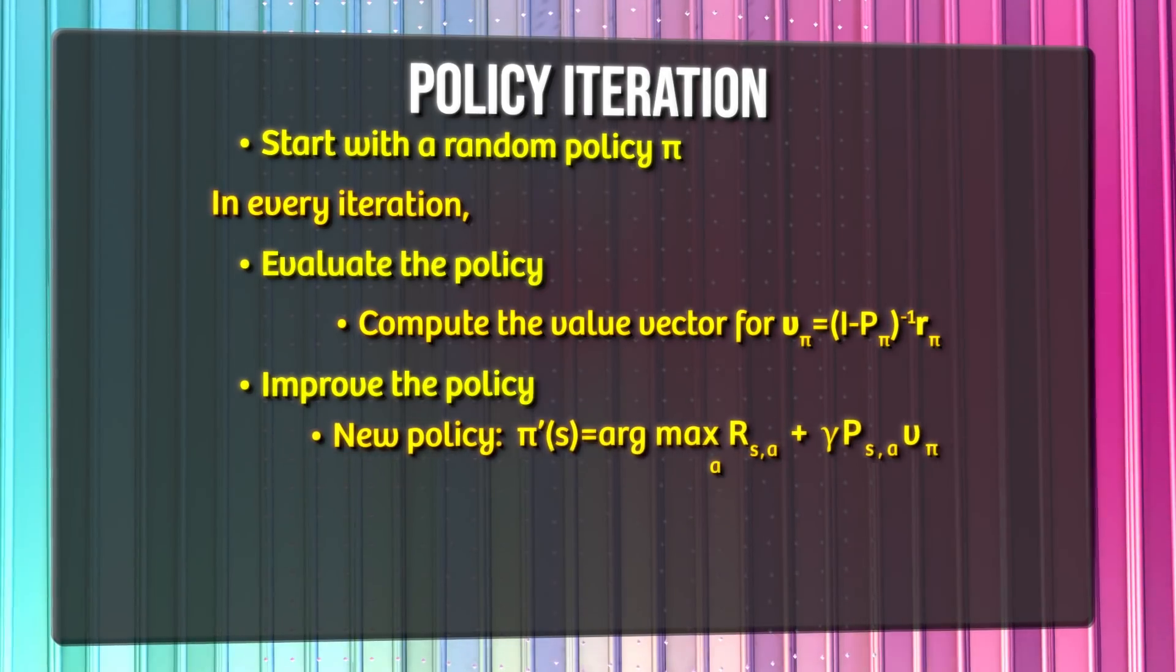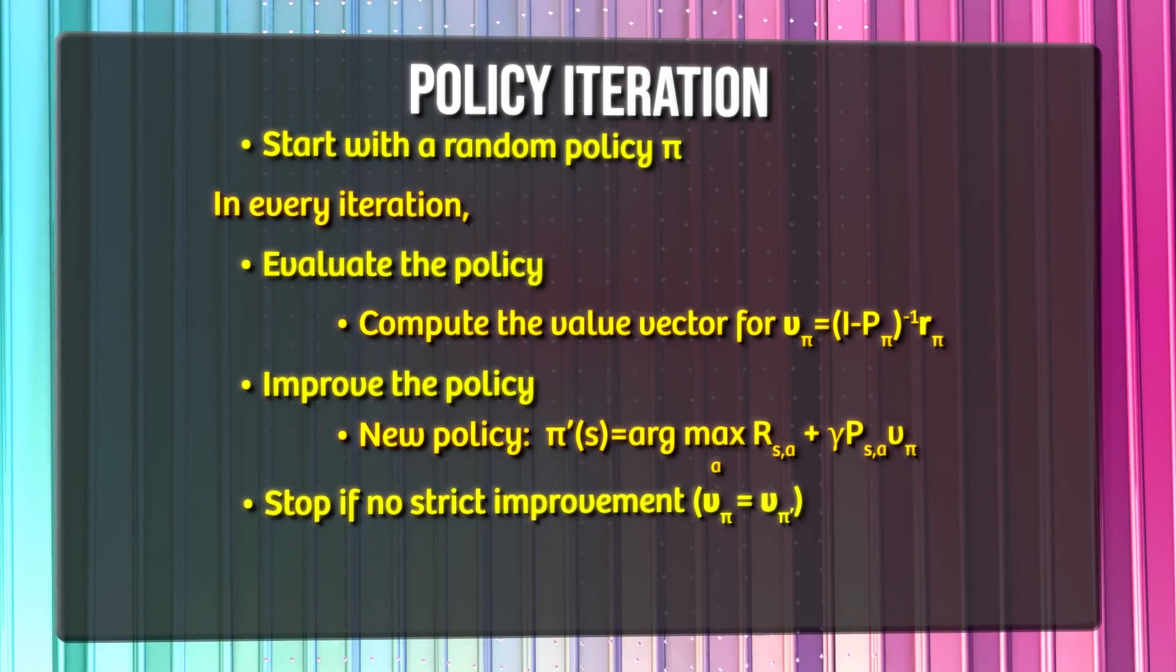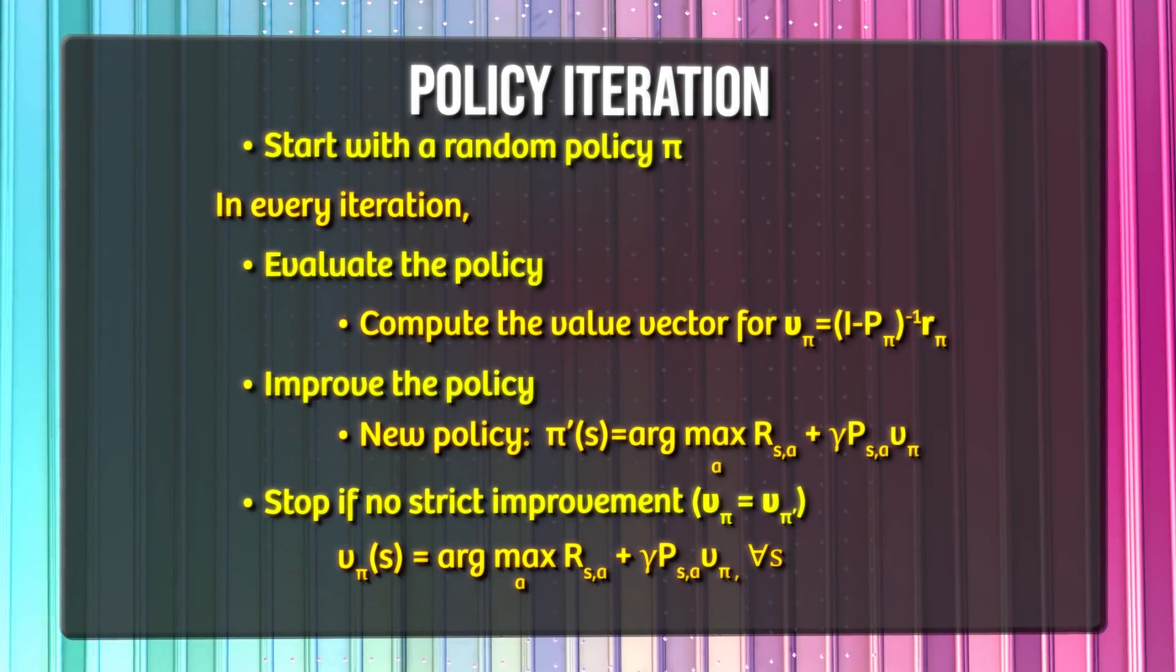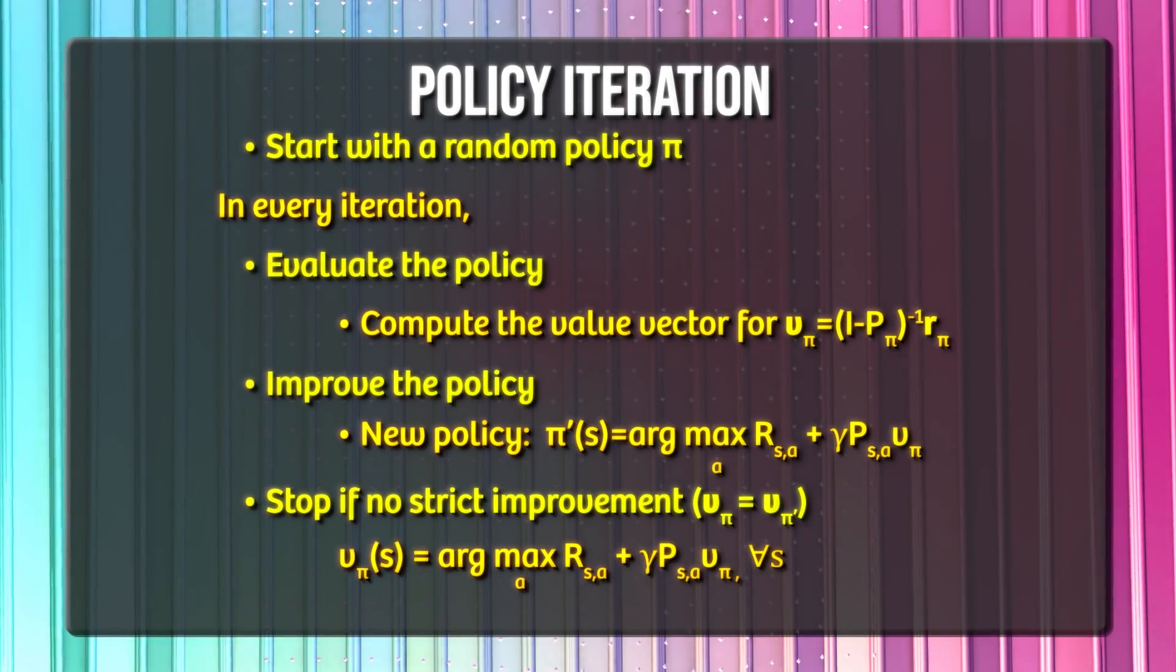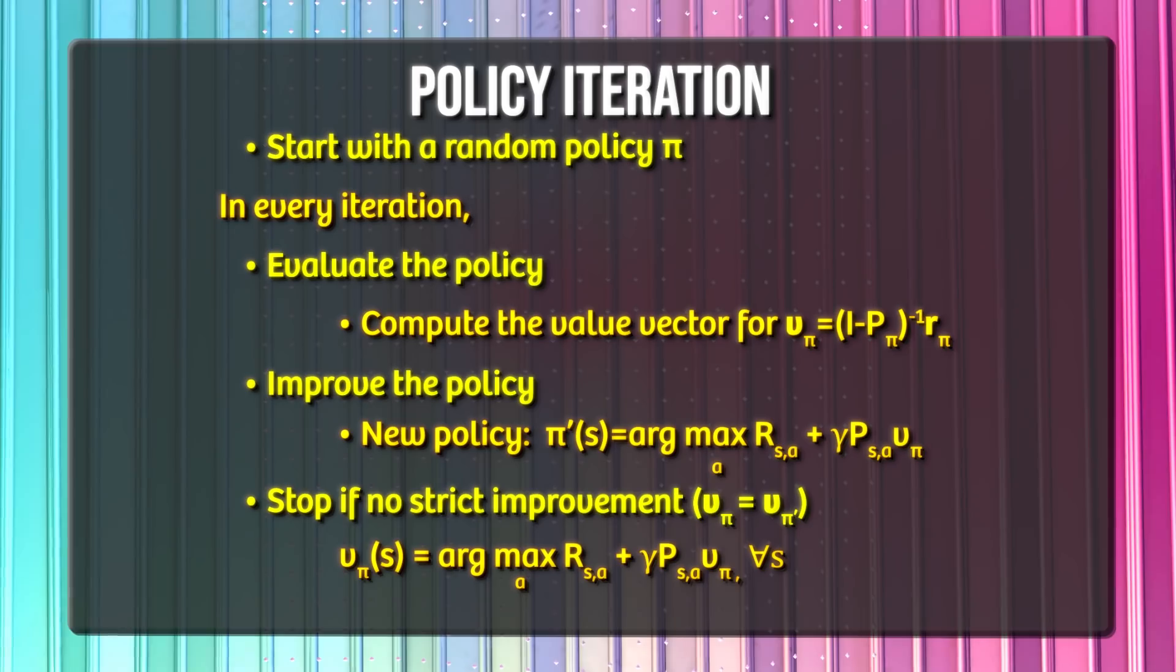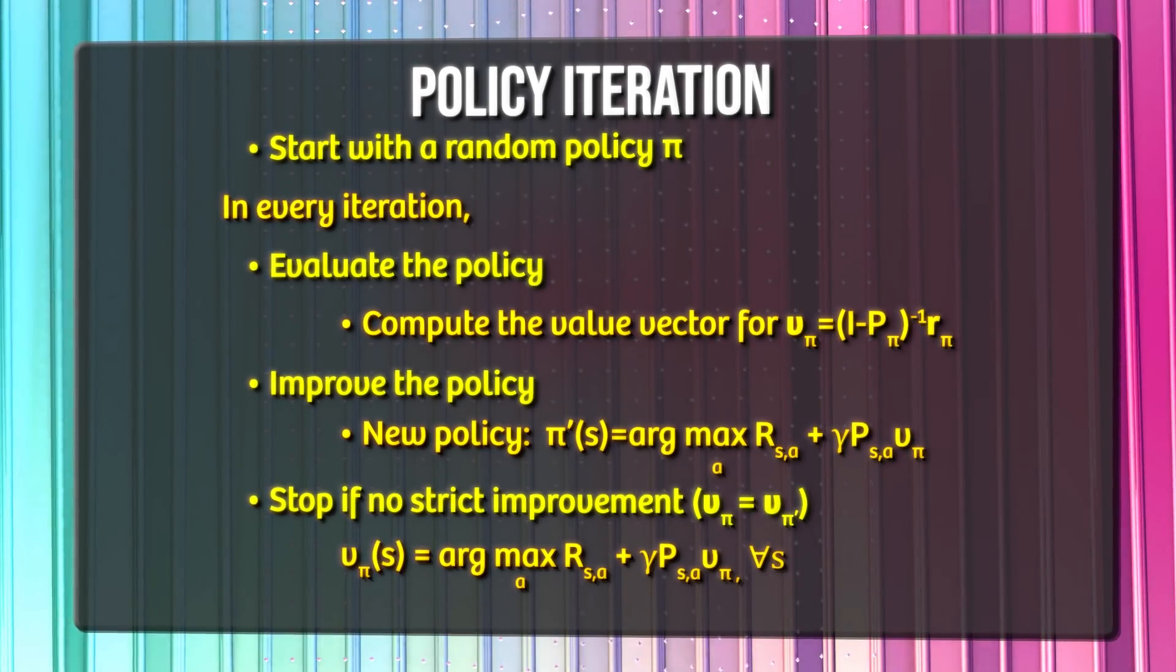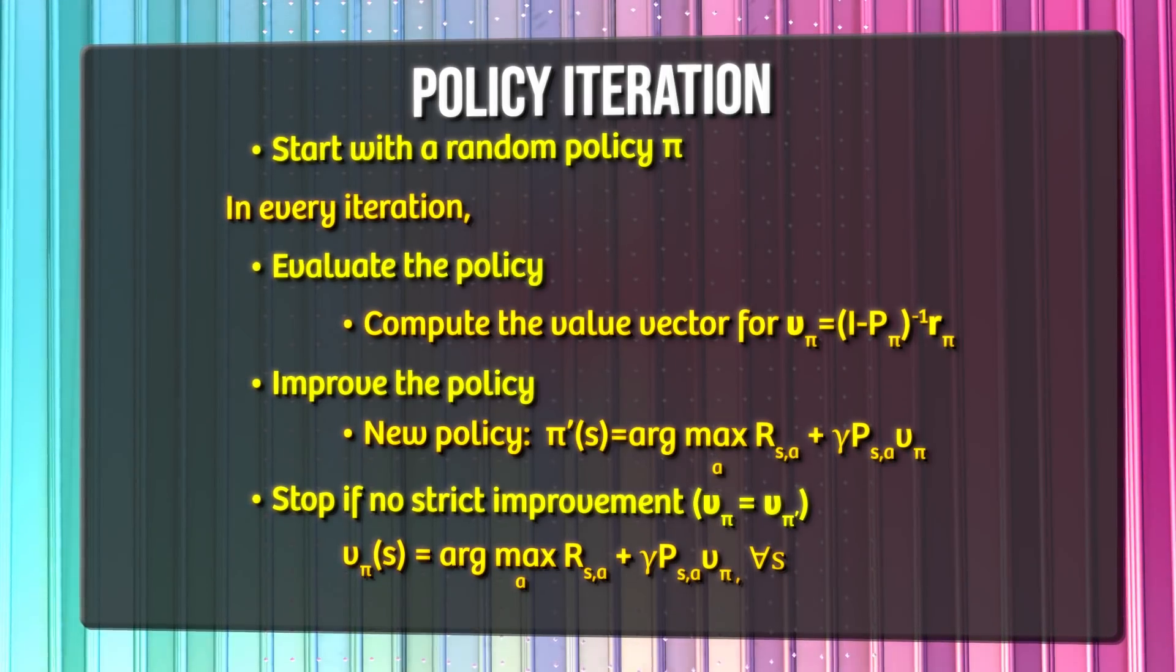Makes sense, but we can definitely do better than our initialized policy that does nothing. Policy improvement, then, is the act of looking at all actions an agent could take from a given state and then choosing the action that gives the highest return with respect to our value function. Our system will look through these two processes iteratively. This is policy iteration.